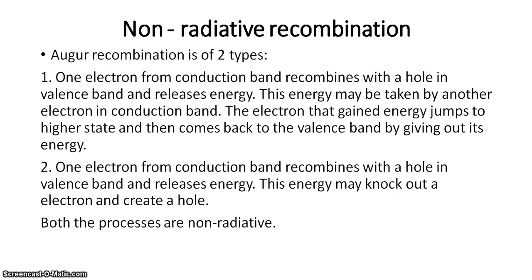In Auger recombination, one electron from the conduction band recombines with the hole in the valence band and releases energy. This energy may be taken by another electron in the conduction band, which then jumps to a higher state and comes back to the valence band by giving out its energy. Alternatively, this energy may knock out an electron and create a hole. Both processes are non-radiative and are called Auger recombinations.